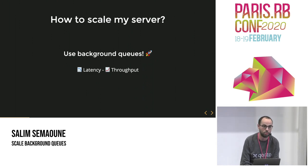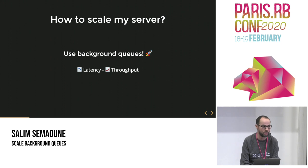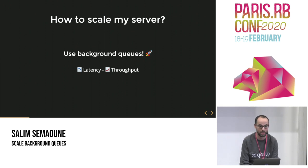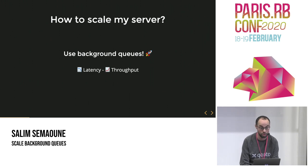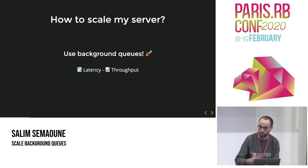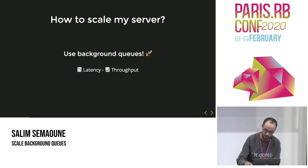I'm sure you've all heard about libraries like Sidekiq, Resque, or Delayed Jobs. I think they are the most mentioned solutions when you hear about how to scale a web application or Rails server. Most of the time, if you look on the internet, the answer is just: use background queues, use Sidekiq, use Resque. And that's a really clever solution — it helps you reduce latency, respond to requests in a shorter amount of time, and automatically increase throughput so you can serve multiple requests at the same time.